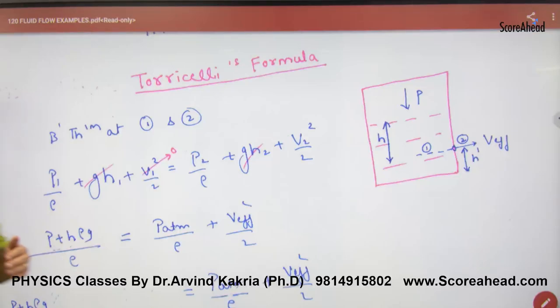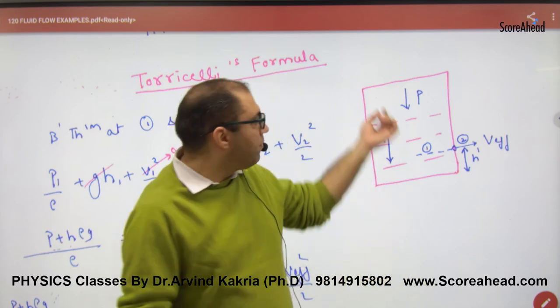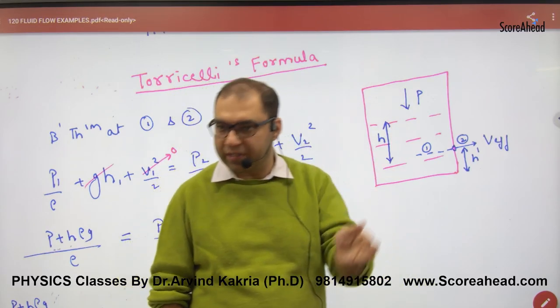What is Torricelli's formula? It describes the velocity of efflux in an open container. When the container is closed, Torricelli's formula is used to calculate the efflux velocity.